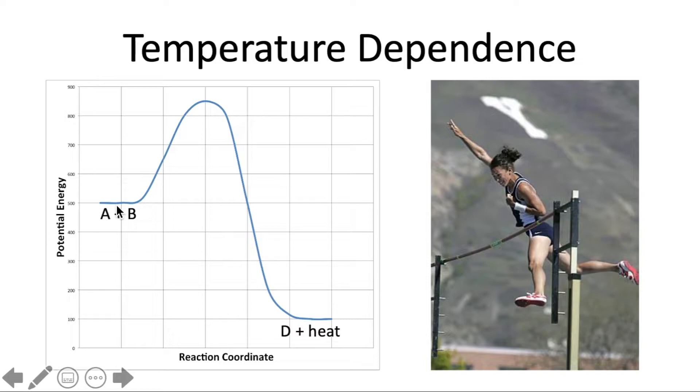So if we give people a lot of energy, maybe a running start with our hurdle, more people are going to be able to get over the hurdle going in the forward direction. But even with a running start it's still going to be pretty hard for people to get over that huge high jump in the back.